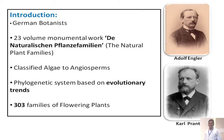Engler and Prantl are two German botanists. They wrote a 23-volume enumerated work. The book name is 'Die Natürlichen Pflanzenfamilien' — the natural plant families. They classified the plants, algae, and use forms. The Engler and Prantl system is a phylogenetic system based on evolutionary traits, and in their classification, they mentioned 303 families of flowering plants.